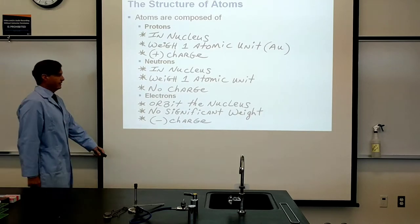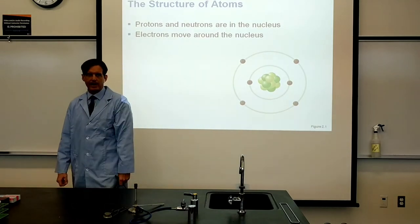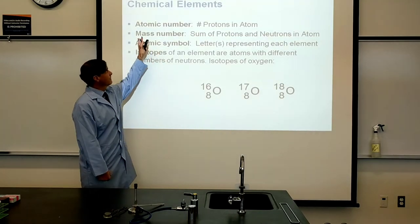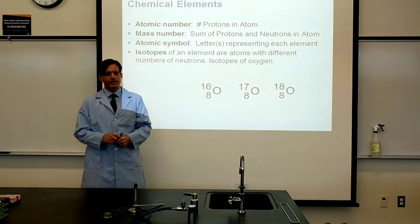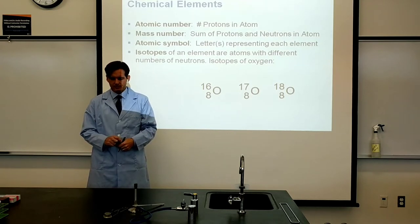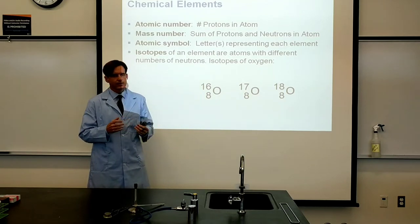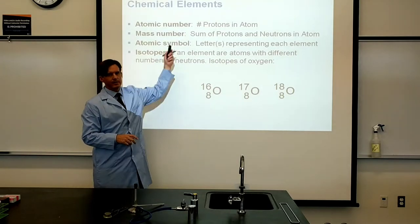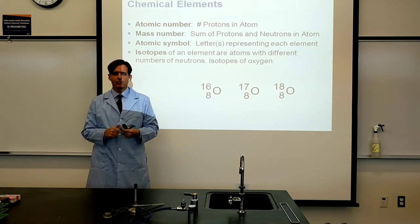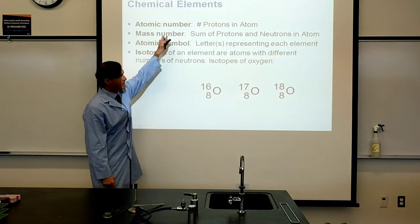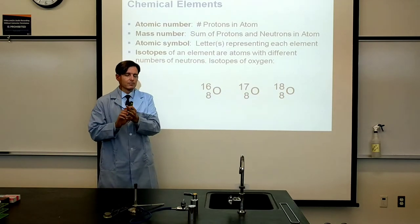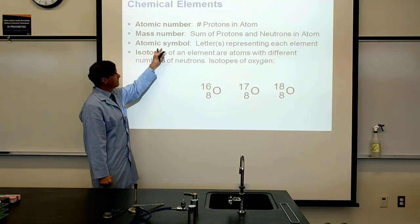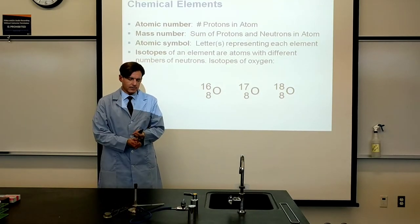Moving forward: the atomic number is defined as the number of protons in an atom, and it's also the number we see on the periodic table. Hydrogen has an atomic number of one because it has just one proton. The mass number takes into account both protons and neutrons — their combined atomic units give us the mass number. We also have the atomic symbol, such as 'H' for hydrogen.